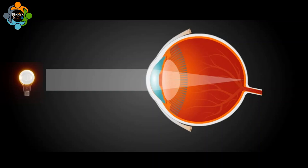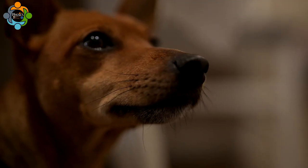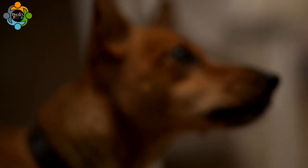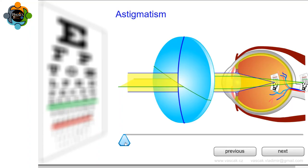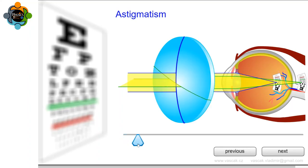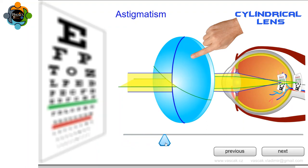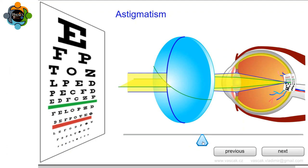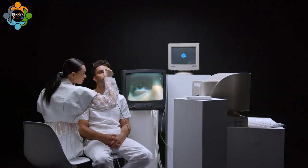Lastly, we have astigmatism. This defect occurs when the cornea or lens has an irregular shape, causing light to be focused unevenly on the retina. This results in distorted or blurred vision at all distances. The physics solution for astigmatism is the use of cylindrical lenses. These lenses have different curvatures in different directions, which corrects the uneven focusing of light, thereby improving vision.